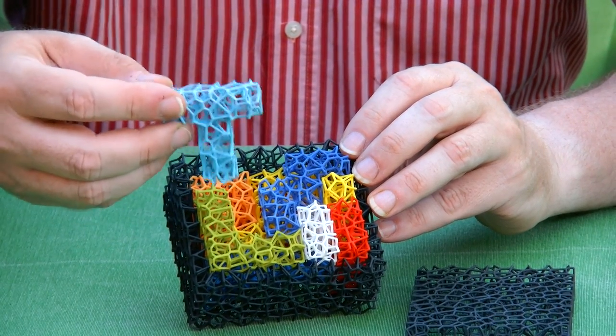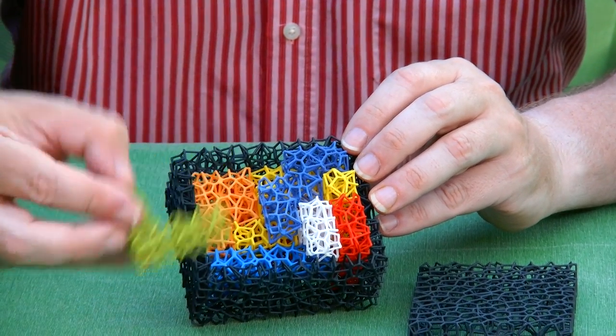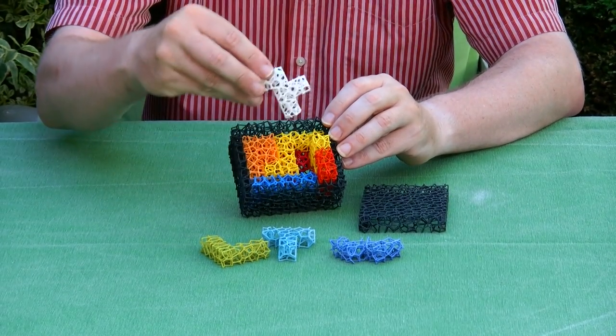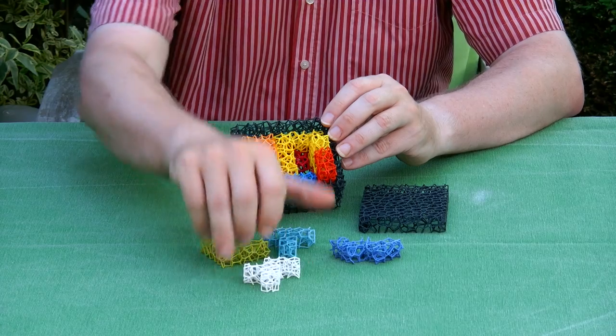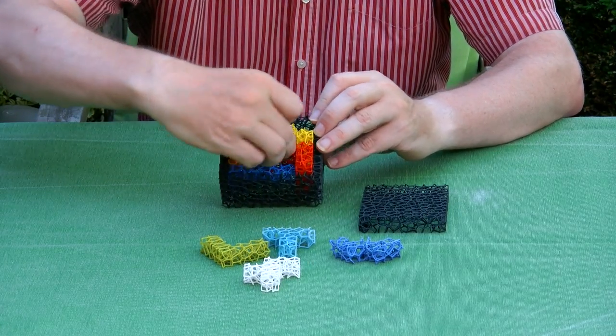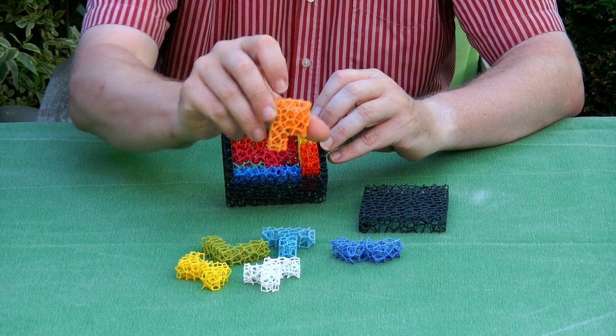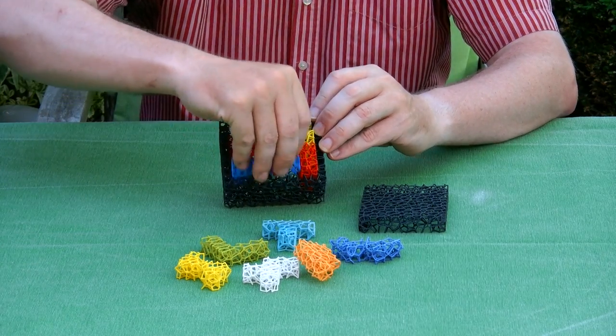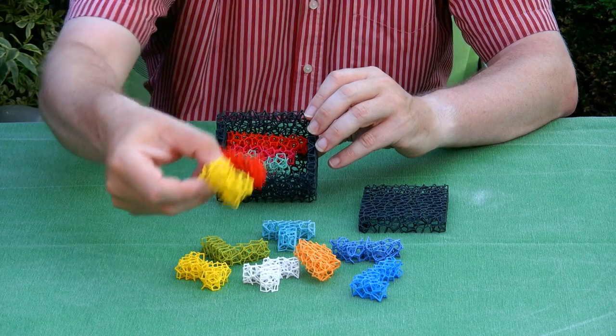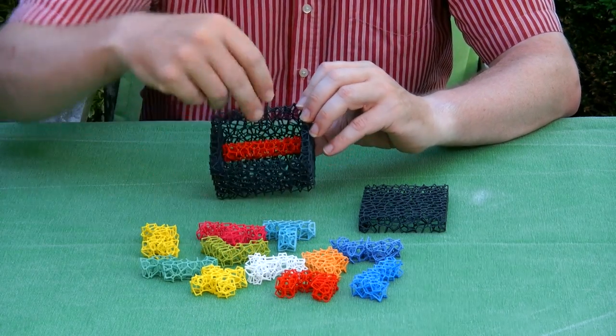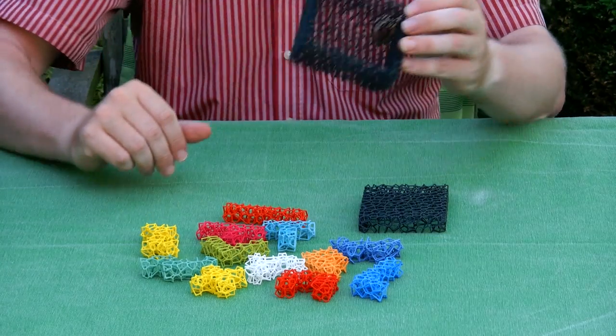So here we have the t pantomino, the v pantomino, w, f pantomino, c, z pantomino, p pantomino, there we go, L, X, U, Y, and there we are.